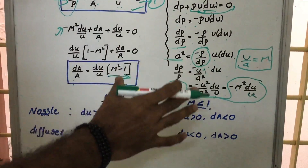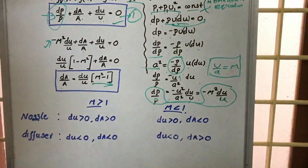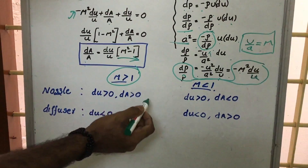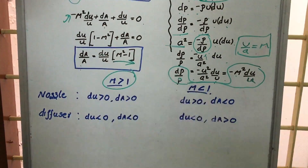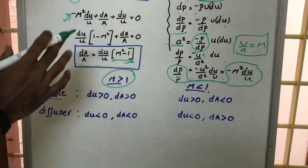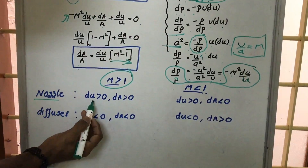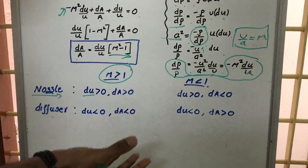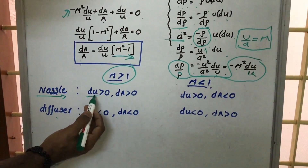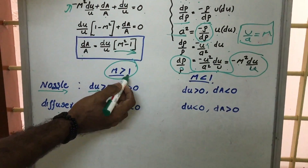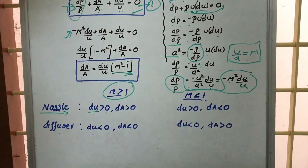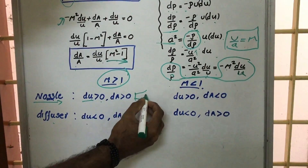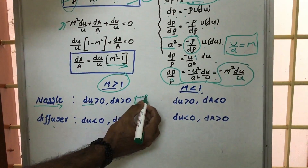By analyzing this equation, we can determine what type of nozzle to use. For a supersonic nozzle, M is greater than 1 and du is greater than zero (velocity is increasing). Both M²−1 and du/u are positive, so dA must be positive — meaning the area is increasing. Therefore, a supersonic nozzle has a diverging shape.